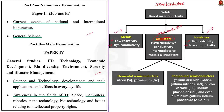Semiconductors are further classified into two types: elemental semiconductors and compound semiconductors. Elemental semiconductors are those composed of a single species of atoms, like silicon and germanium. Compound semiconductors are those made of two or more elements. Gallium arsenide, gallium nitride, silicon carbide, indium phosphide, and even aluminium gallium indium phosphide are examples of compound semiconductors.